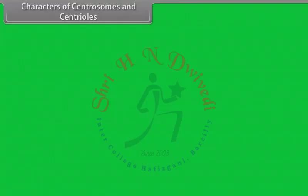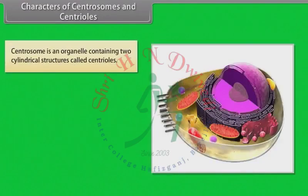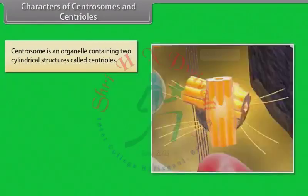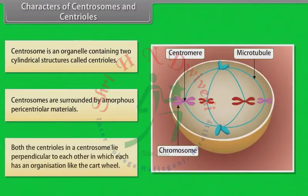Characters of centrosomes and centrioles. Centrosome is an organelle containing two cylindrical structures called centrioles. Centrosomes are surrounded by amorphous pericentriolar materials. Both the centrioles in a centrosome lie perpendicular to each other, and each has an organization like the cartwheel.